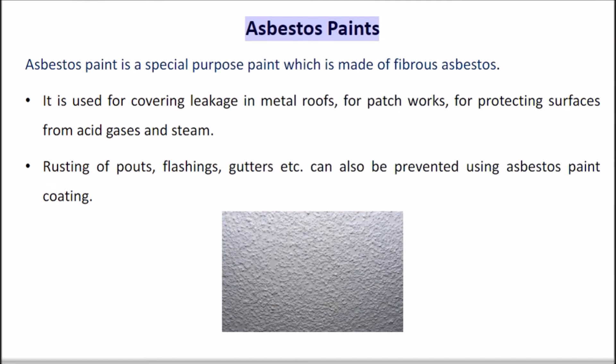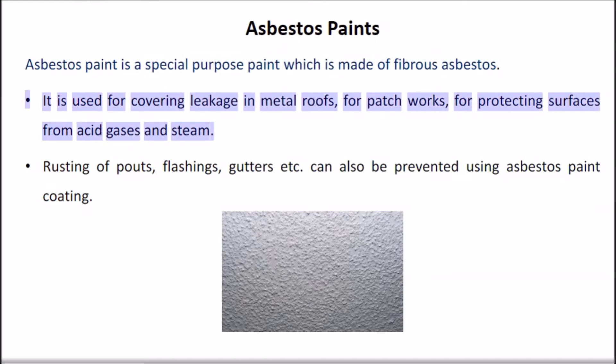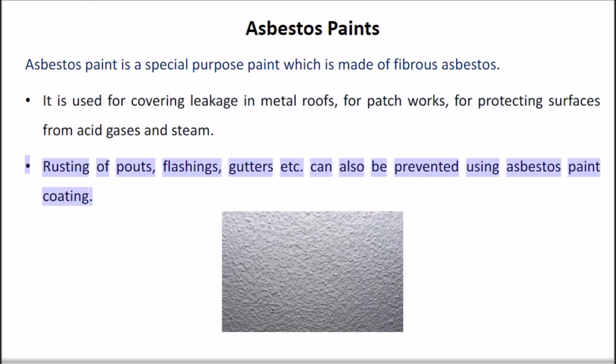Asbestos paint is a special purpose paint which is made of fibrous asbestos. It is used for covering leakage in metal roofs, for patchworks, and for protecting surfaces from acid gases and steam. Rusting of spouts, flashings, gutters etc. can also be prevented using asbestos paint coating.